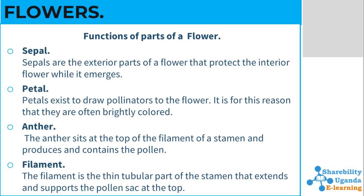Petals — the main purpose of the petals is to attract pollinators to the flower. They are brightly colored so that they can make the flower attractive to insects and to humans. The anthers sit at the top of the filament of the stamen — the stamen is the male part of the flower. The anthers produce and contain the pollen grains. The filament is the thin tubular part of the stamen that extends and supports the pollen sac at the top.